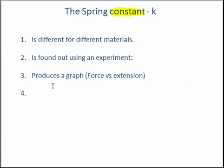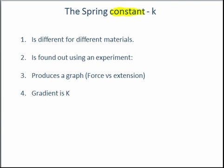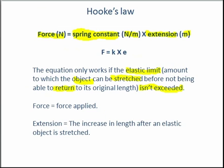That's how you plot this graph, and essentially the spring constant k is the gradient. You may be asked to do questions on working out this gradient. We know how to do this because we've done it with other similar graphs such as speed, distance, and time. To work out k, all you need to do is take the force and divide it by the extension, so k equals F over e.